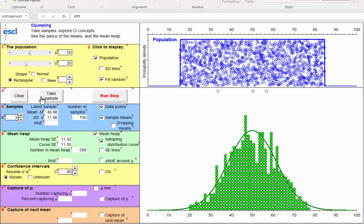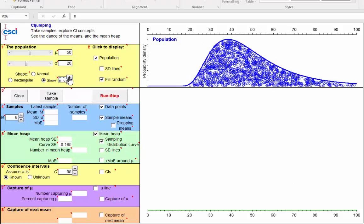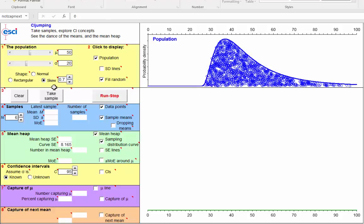Okay, let's try a distribution, a population distribution with a different shape, a skewed distribution. And I'm going to take samples of size 6, and I'm going to make it really skewed, setting the skew parameter to 0.7, samples of size 6, and I'm going to drop down the sample mean. So this is the dance of the means for samples of size 6 from this highly skewed population. What will be the shape of our sampling distribution?